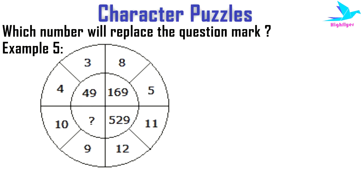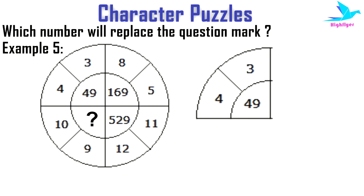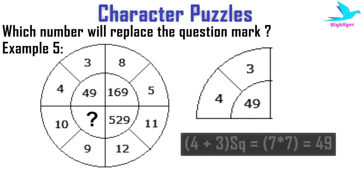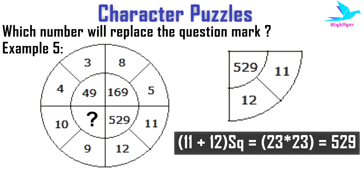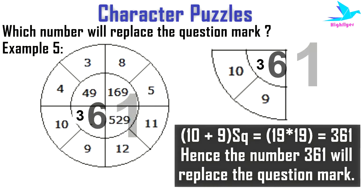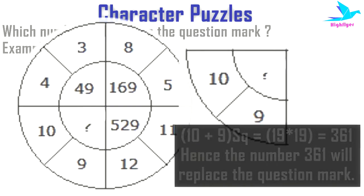The next example looks a bit complicated, but let's simplify it. Since the circle is divided into four equal parts, we take each part as an individual figure and establish a relationship between the three numbers in each sector: (4 + 3)² = 7² = 49, (8 + 5)² = 13² = 169, (11 + 12)² = 23² = 529. So the required number will be (10 + 9)² = 19² = 361.